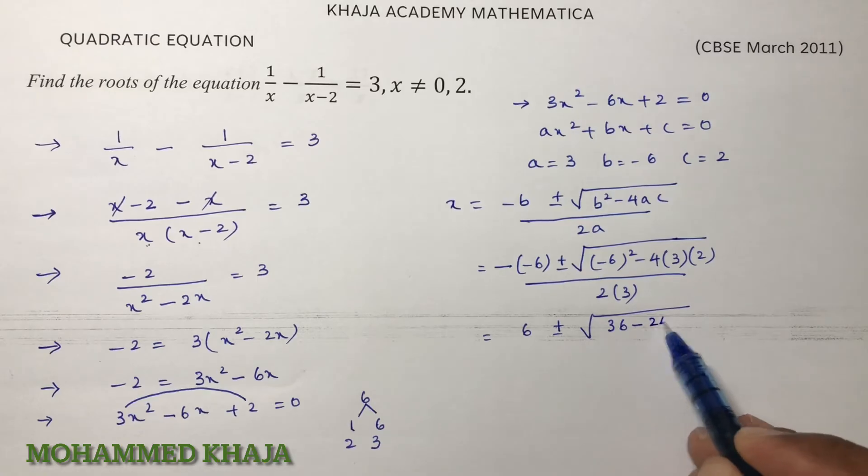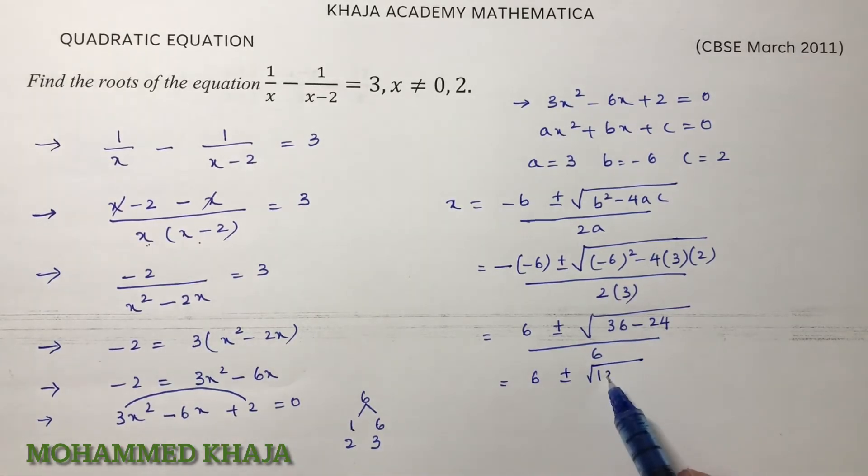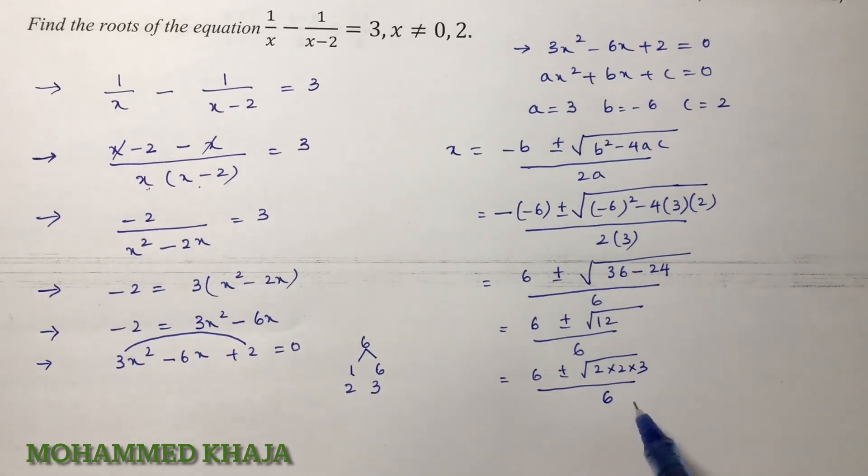6 ± √12/6. Now here 12 prime factors: 2 × 2 × 3. This 2 × 2 we can write outside as just 2. So 6 ± 2√3/6.